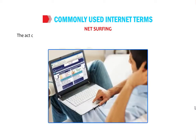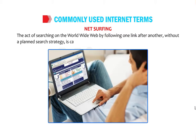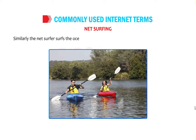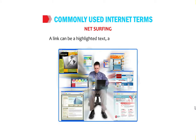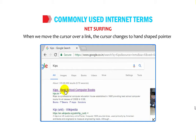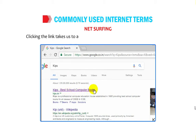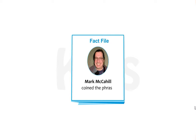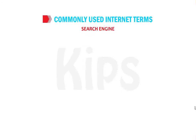Net surfing is the act of searching on the World Wide Web by following one link after another without a planned search strategy. Just like a surfer rides the waves, the net surfer navigates the ocean of knowledge by following links. A link can be a highlighted text, a button, or an image. When you move the cursor over a link, it changes to a hand-shaped pointer. Mark McCahill coined the phrase 'surfing the net.'